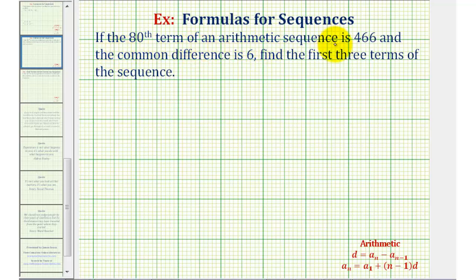If the 80th term of an arithmetic sequence is 466 and the common difference is six, we want to find the first three terms of the sequence.